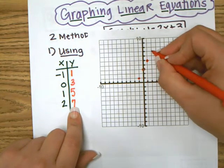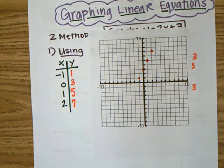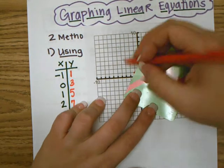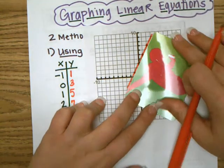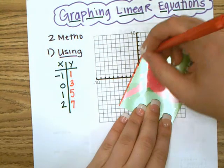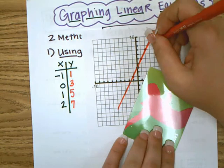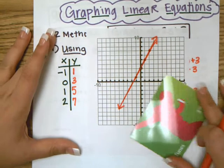And then we're going to go to the right one and then up to five. And then over two and up to seven. And then we are going to graph our line across the entire graph, because those four are not the only points on this line — there are many other solutions.